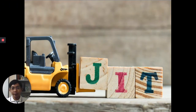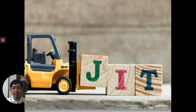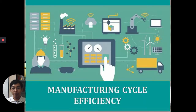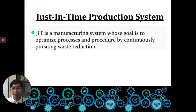For today's video we will be discussing three topics: namely JIT or Just-In-Time production systems, backflush costing, and manufacturing cycle efficiency. Let's start. JIT is a manufacturing system whose goal is to optimize processes and procedures by continuously pursuing waste reduction.